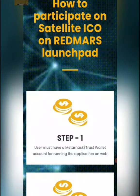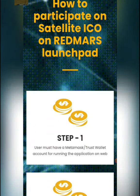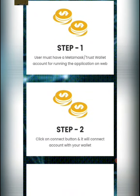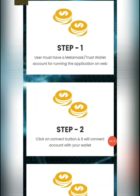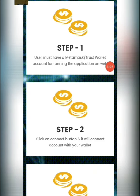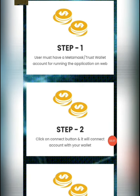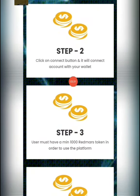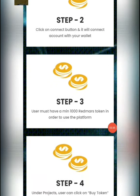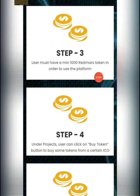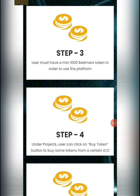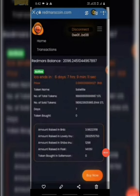First, we will mention how to participate in the Satellite ICO on Redmars Launchpad. First step: let's see if we have a trust wallet, but we have a MetaMask wallet for running the application on the web. Next, click on the connect button and we will connect automatically with your network. Next, we will see that there are 1,000 Redmass tokens required in order to buy on this platform. So we will see that there will be a buying process.